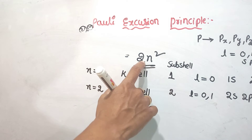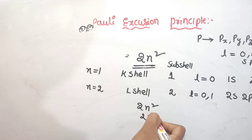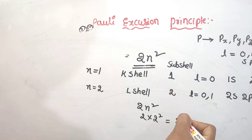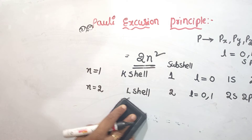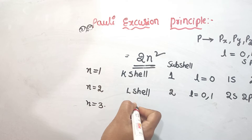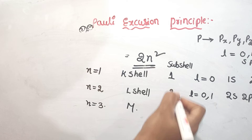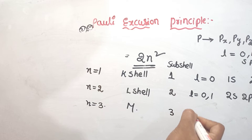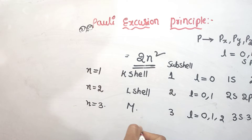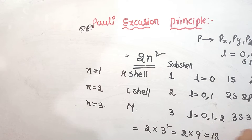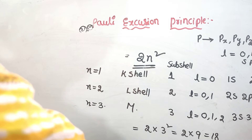For n equal to 2, the L shell: 2 into 2 squared equals 2 into 4 equals 8 electrons total. For n equal to 3, the M shell has 3 sub-shells with l equal to 0, 1, 2 — that is 3s, 3p, 3d. Using 2n²: 2 into 9 equals 18 electrons.